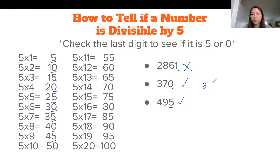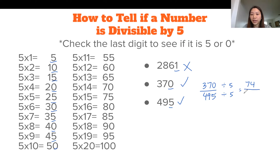So if you have the fraction 370 over 495, you know that you can divide top and bottom by 5. 5 goes into 37 seven times with 2 left over, and then 5 goes into 20 four times, giving 74. 5 goes into 49 nine times with 4 left over, and then 5 goes into 45 nine times, giving 99. And then you can check to see if that's simplifiable again.